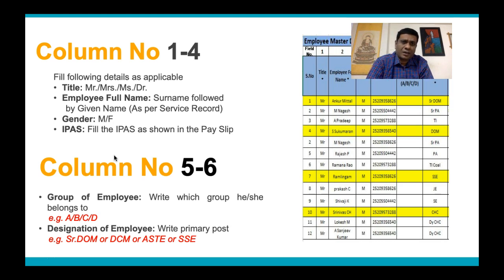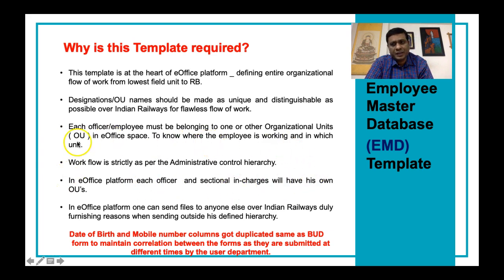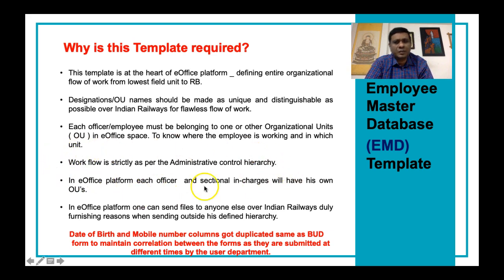I will discuss column by column how this template needs to be filled, so that the concerned railway administrator can feed this data into the system and make eOffice functional for your division, general headquarters, or production unit. Regarding workflow, whenever defining who is the in-charge or reporting officer for an employee, it should strictly be on the administrative control basis — not technical control. For example, the Senior DST has administrative control under the DRM, whereas technical control is under the PCST.